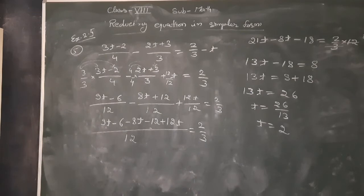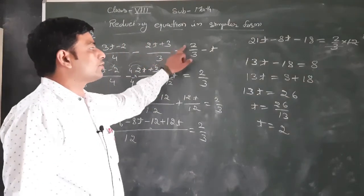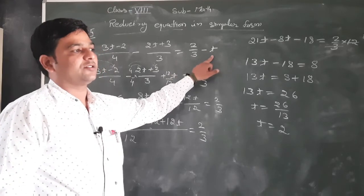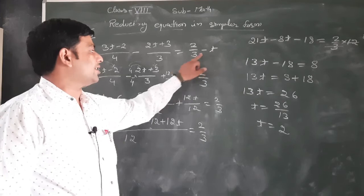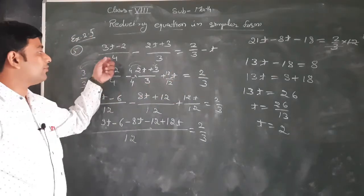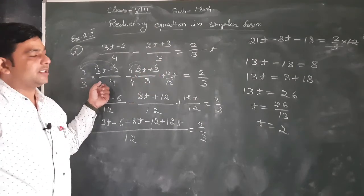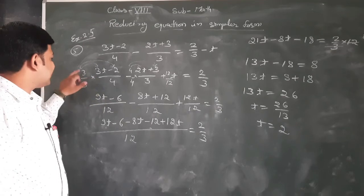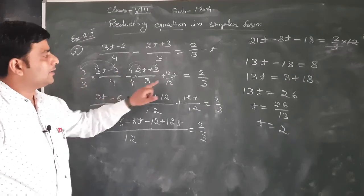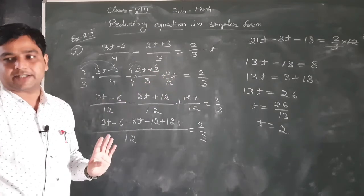Question number 5: 3t-2/4 - 2t+3/3 = 2/3 - t दिया हुआ है। सबसे पहले variables को one side लेके जाएंगे — minus t इधर आएगा तो plus t हो जाएगा। Denominator same बनाना है: 4 और 3 दोनों के table में 12 आता है, हम 12 बनाएंगे। इस 4 को 3 से multiply-divide, इस 3 को 4 से multiply-divide, और t के नीचे 1 है इसलिए 12 से multiply-divide करेंगे।